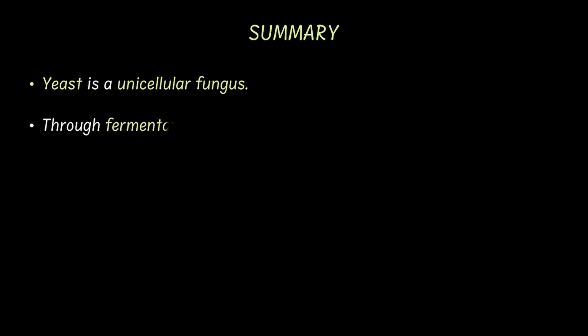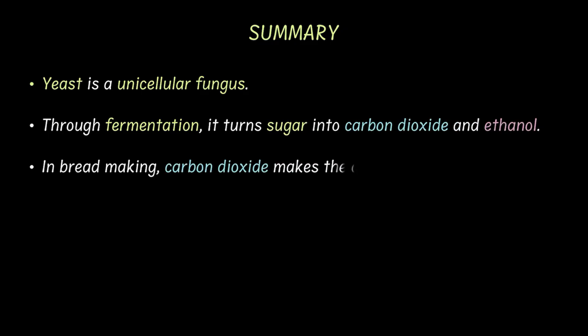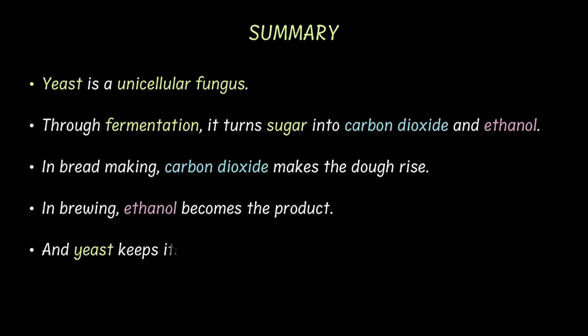So to sum up everything that we learned: yeast is a unicellular fungus. Through fermentation, it turns sugar into carbon dioxide and ethanol. In bread making, carbon dioxide makes the dough rise. In brewing, ethanol becomes the product. And yeast reproduces through budding.